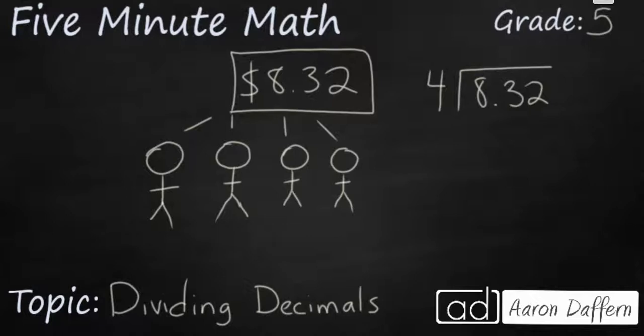The only difference when you're dividing decimals as opposed to whole numbers is you want to make sure that the decimal is in the exact same spot in the quotient up on the division bar as it is in the dividend. So I'm going to bring that decimal up, and then I'm going to treat it like a normal division problem. So, 4 goes into 8 twice, and we're going to go ahead and multiply that. Ignore the decimal because you've already done all your work with the decimal by putting it up on the division bar.